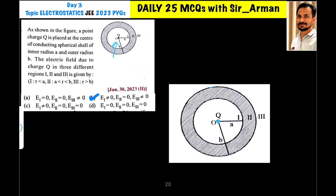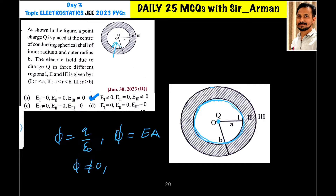For Region 1, the charge q is placed inside the shell. Applying Gauss's law, the charge enclosed by the inner shell is q, so the flux equals q divided by epsilon naught. Since flux equals E times A, and flux is not zero, the electric field E is also not zero.